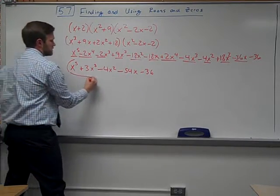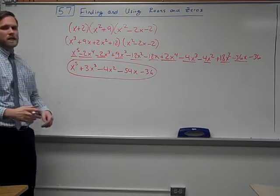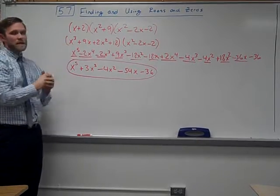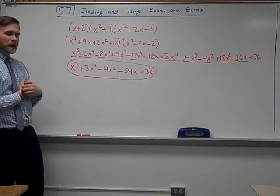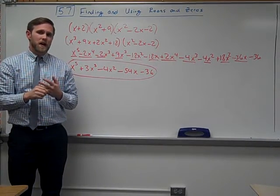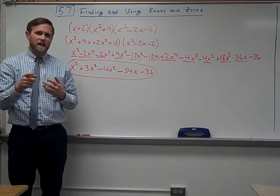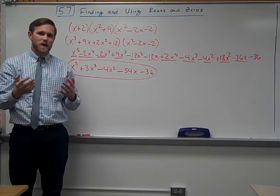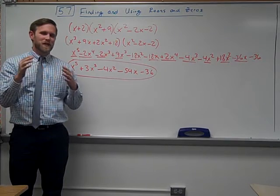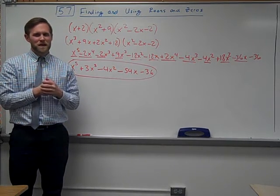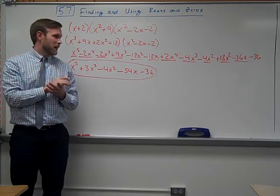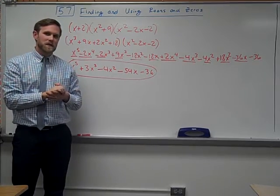Our final polynomial function is x⁵ + 3x³ − 4x² − 54x − 36. That polynomial function gives you the zeros provided at the beginning. That's all I've got for you — you're totally prepared for the in-class assignment with Miss Moriarty. She'll explain the directions to you. Feel free to send me Remind messages with any questions. Thank you for being attentive, and have a great day — I'll see you when I get back next week!